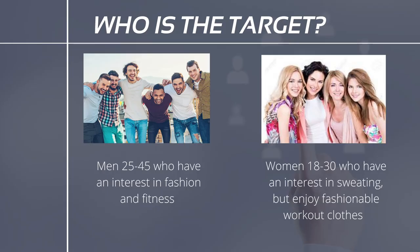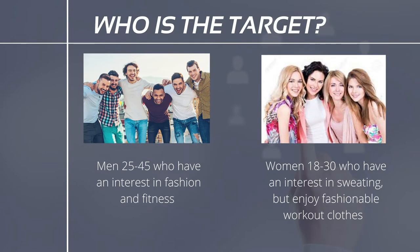Who is the target audience? Men 25 to 45 years old who have an interest in fashion and fitness, and women aged 18 to 30 who enjoy sweating — whether that's yoga, gym, going on a walk, or a run — and who enjoy fashionable workout clothes. Between men and women, these age ranges like to work out approximately three times a week for no longer than about an hour. Built offers premium basics that are both higher quality and priced affordably for those that enjoy a workout and want to use the clothes for other outings besides just working out.